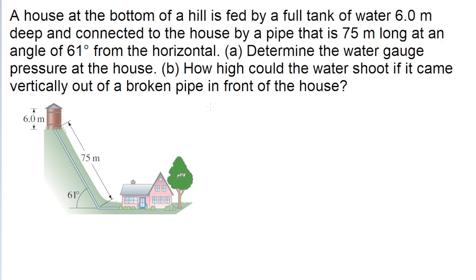The important thing to recall for this problem is that gauge pressure is dependent on vertical depth. Angle and horizontal components are not relevant when considering the magnitude of the pressure. The formula for gauge pressure is equal to the density of the fluid multiplied by the gravitational acceleration multiplied by the depth into the fluid that we're looking at.